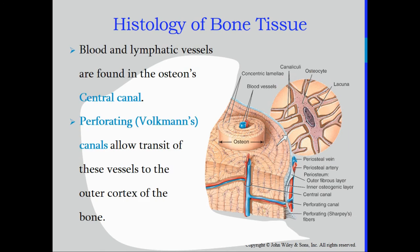Blood and lymphatic vessels are found in the osteons. Each osteon has a central canal — also called the Haversian canal — where blood vessels run through the bone. The perforating or Volkmann's canals allow transit of these vessels to the outer cortex of the bone, which is covered by the periosteum. This is how blood gets in and out of the bone.